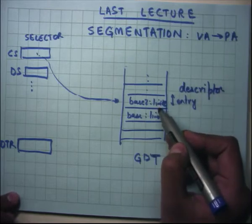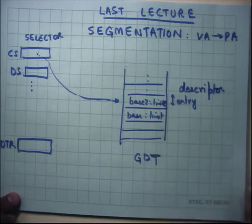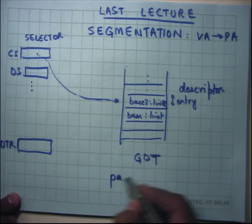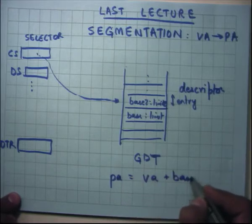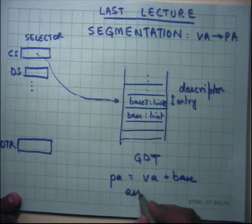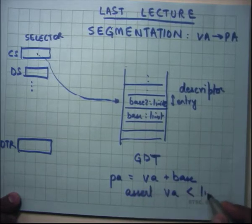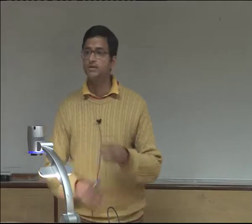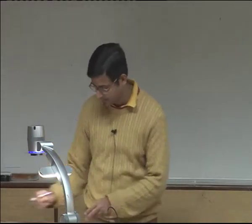Each entry inside the global descriptor table is called a segment descriptor. What the segment descriptor holds are values like base and limit. What the hardware is going to do is compute PA as VA plus base, and it is also going to check that VA should be less than limit. The hardware is doing this at run time on each and every instruction.